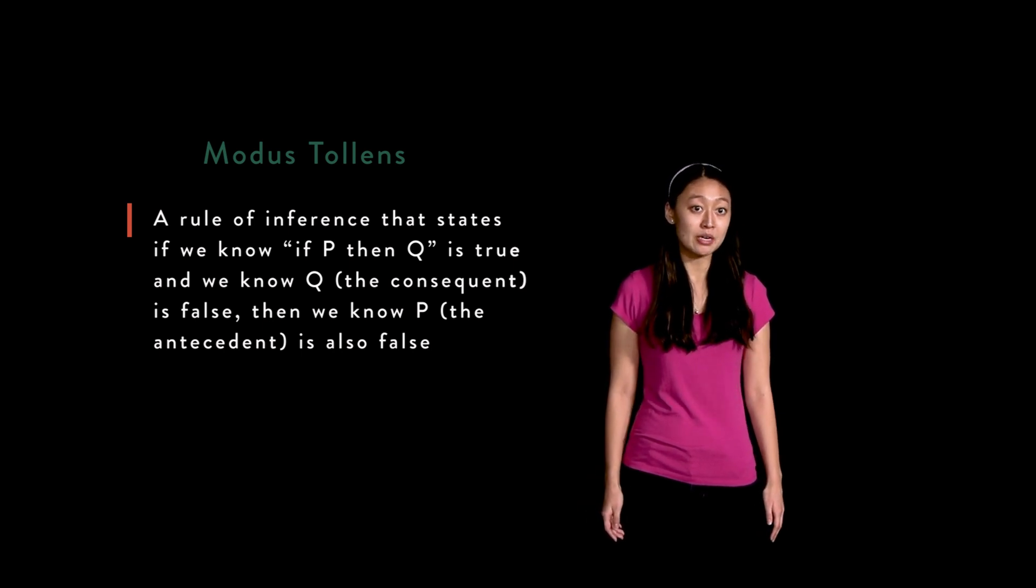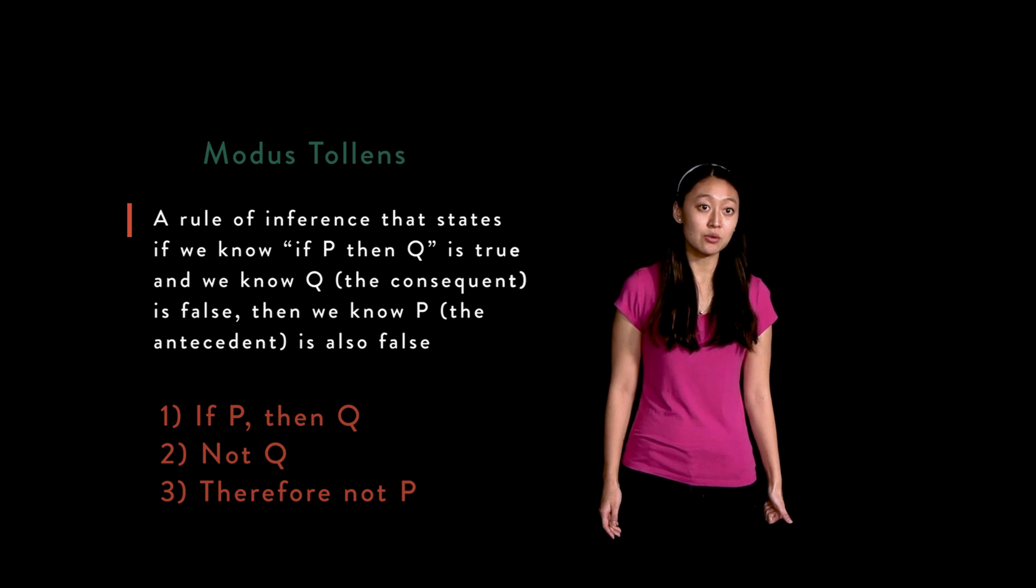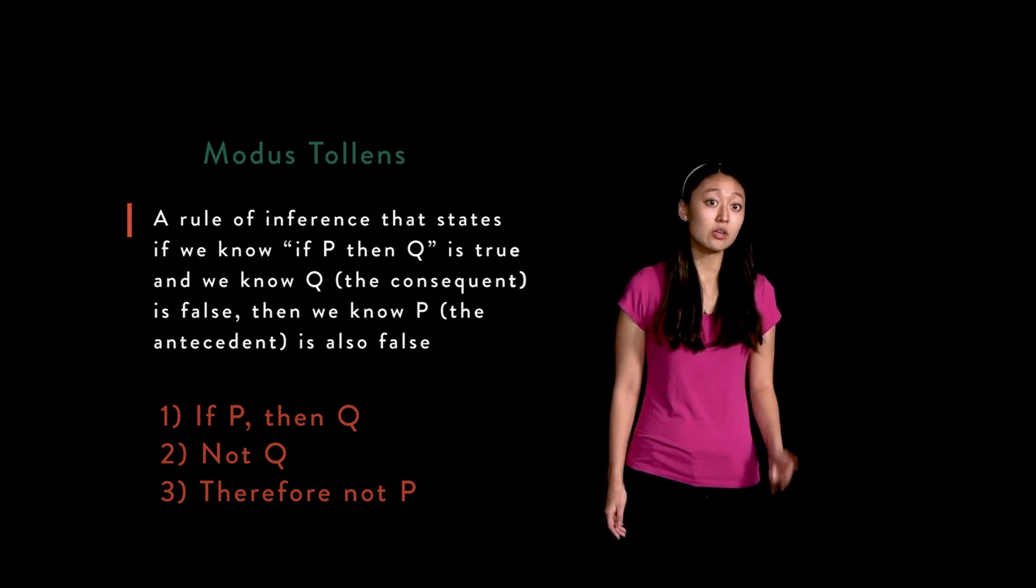In variable notation, the rule appears in the form: if p then q, not q, therefore not p.